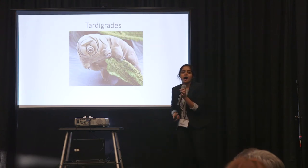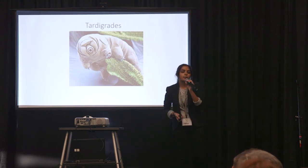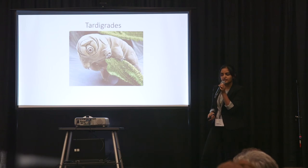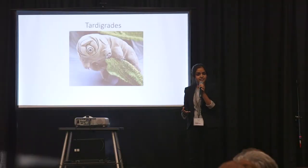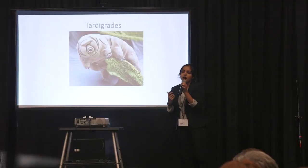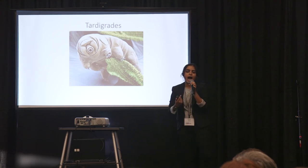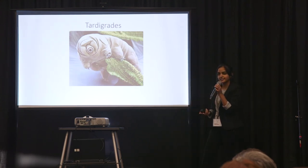So tardigrades, for some background information, are about 10 to 50 micrometers long, meaning that they are the size of a speck of dust. They eat microscopic organisms, algae, and even other tardigrades.